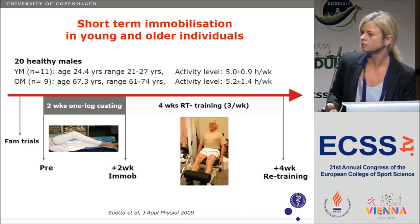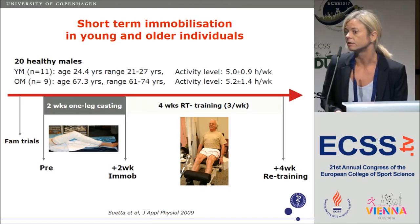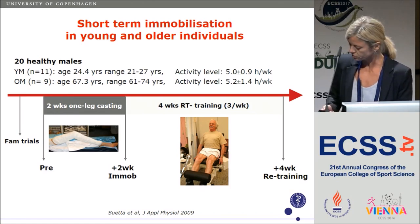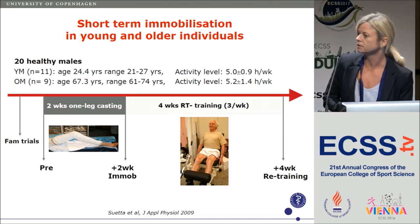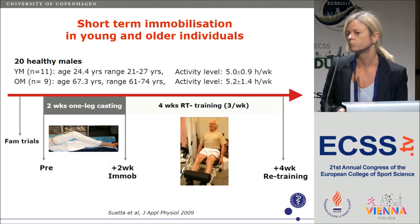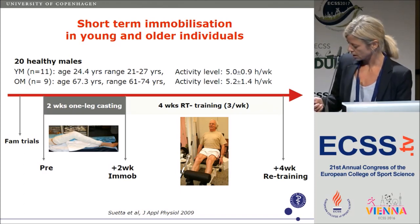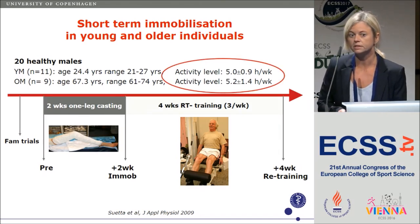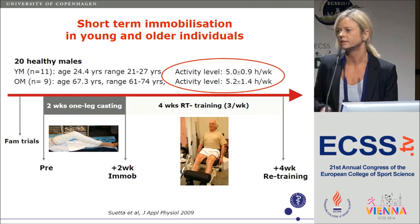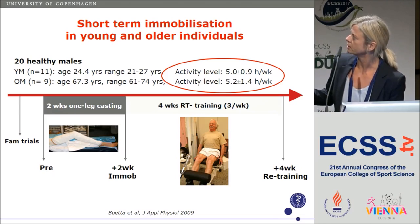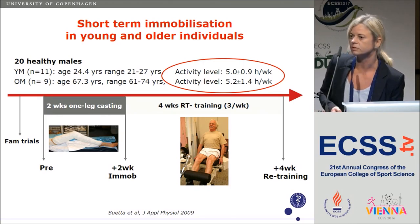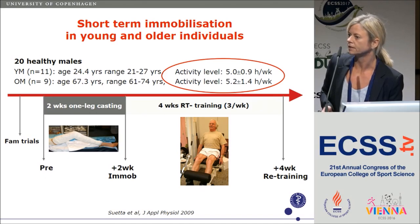To get a little closer to the adaptations in human individuals, we decided some years ago to look at how two weeks of immobility would affect healthy young individuals compared to healthy older individuals. We controlled for activity level, because activity affects muscle mass just as much as aging per se. The older individuals who volunteered for this study were actually quite active, just as active as their younger counterparts.